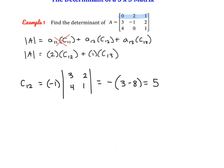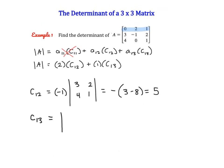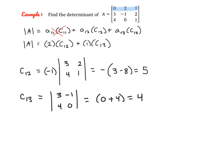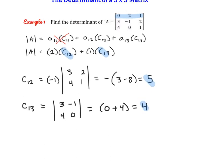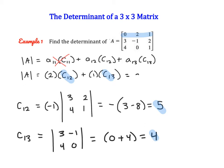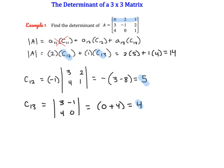Now we need to find the cofactor of (1,3). The sum of 1 and 3 is even, so the cofactor equals the minor. Going back to the original matrix and removing row 1, column 3, we're left with: 3, negative 1, 4, 0. The determinant of that is 0 minus negative 4, which is positive 4. Now we substitute these values back: 2 times 5 plus 1 times 4, which is 14. So the determinant of matrix A is 14.